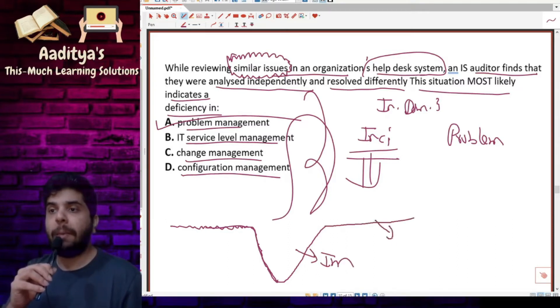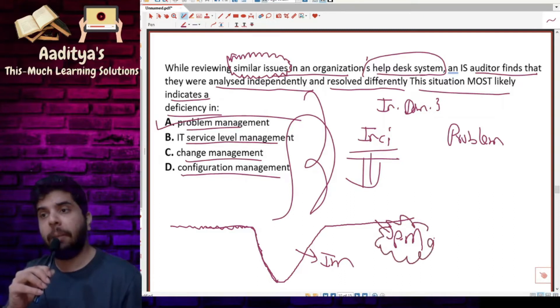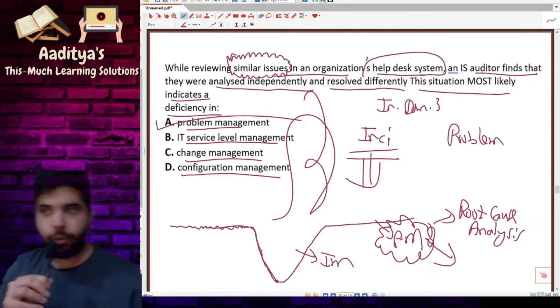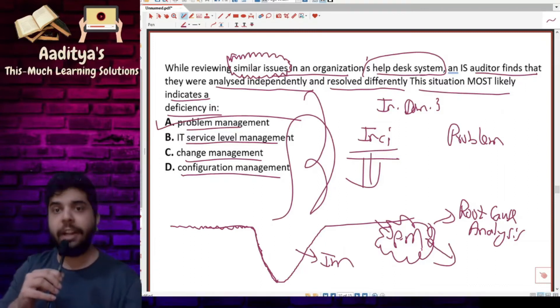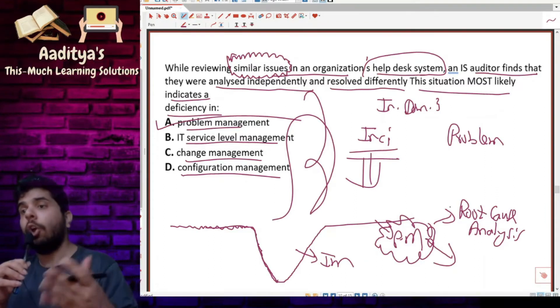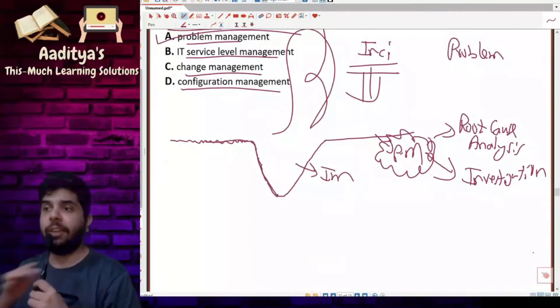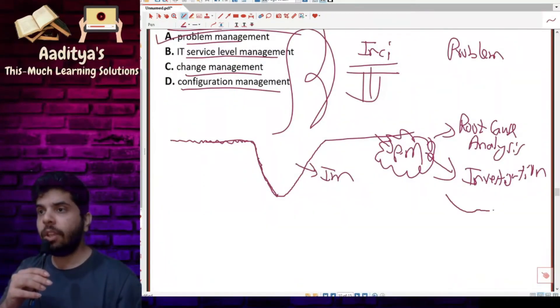Afterwards, problem management comes in. In problem management, we look for root cause analysis, we look for investigation. We also make something known as known error database. There is unknown error and there is known error.